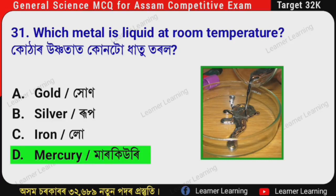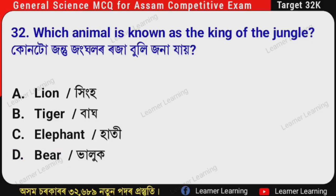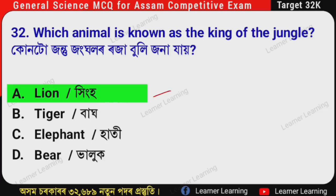Next question: Which animal is known as the king of the jungle? (Assamese: Konto jontu jungle rosa buli jona jae?) The correct option is Option A — Lion. The lion is known as the king of the jungle. Remember this.